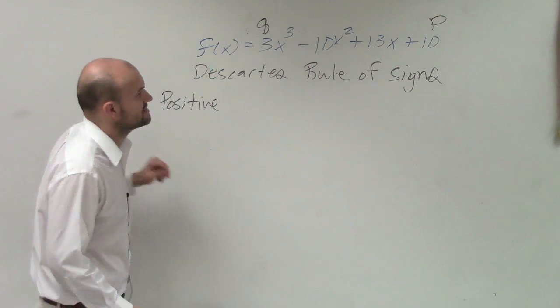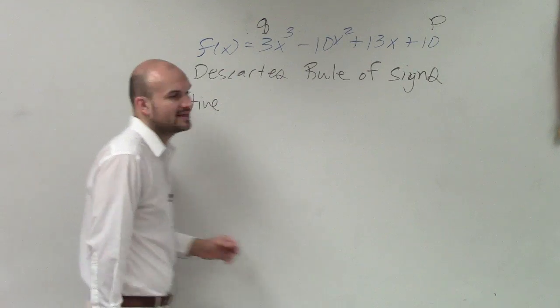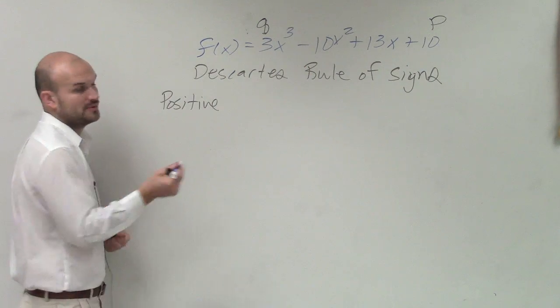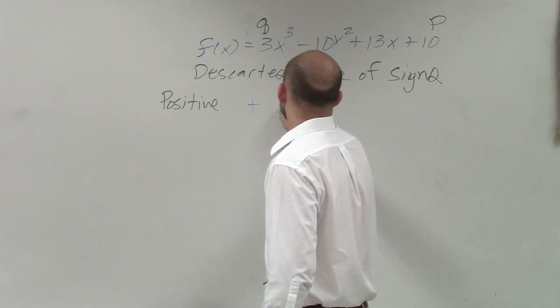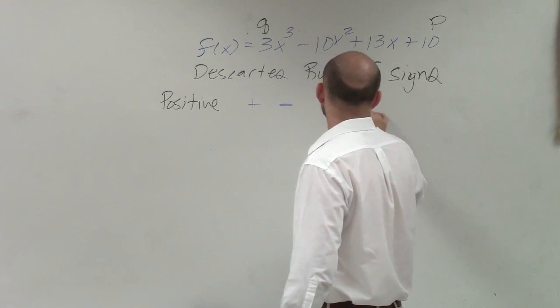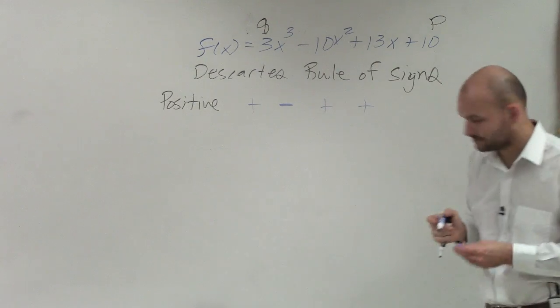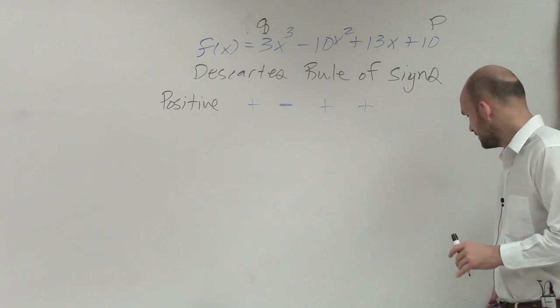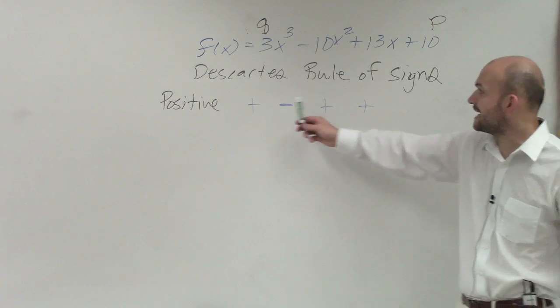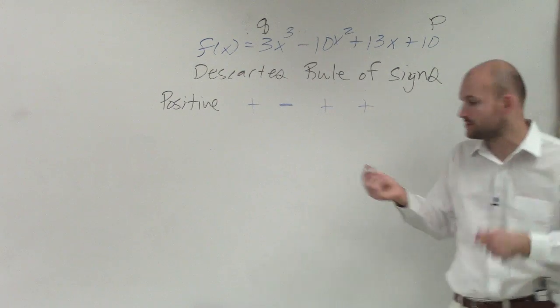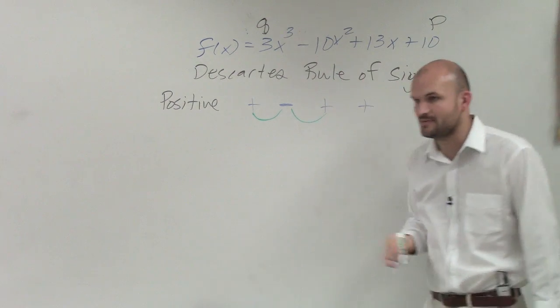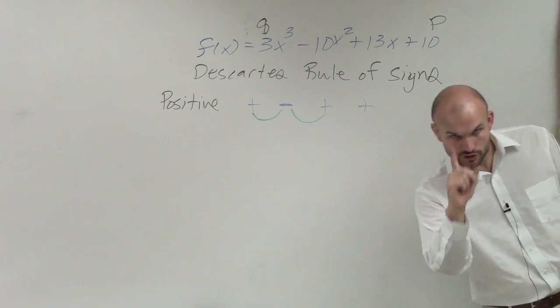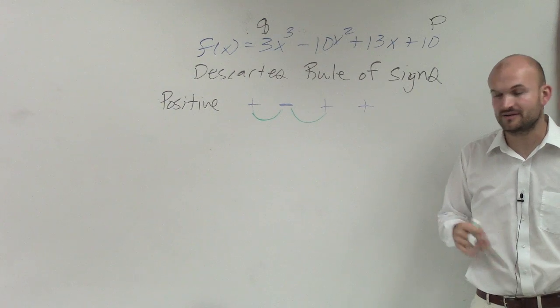If you take the sign of each monomial and write them out - up here I have 3x³, that's positive. So positive to negative to positive to positive. You can see the signs of each monomial alternate from positive to negative and then negative to positive. There's two times that they alternate from a different sign.